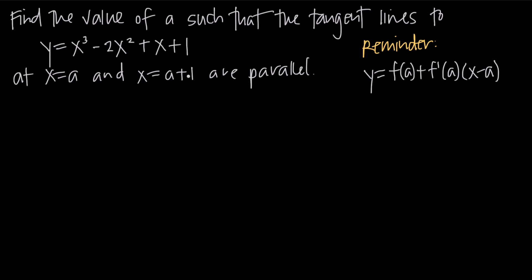How are we going to do that? We're going to need to start by using the formula for the equation of the tangent line, which I've written over here. Remember that if you want to find the tangent line to a function, the way that we do that is by using this formula, and you'll notice that there are four parts to it. The first part is f of a — in order to find f of a, all we need to do is plug a into our original function, and whatever we get as a result, we'll plug in here for f of a.